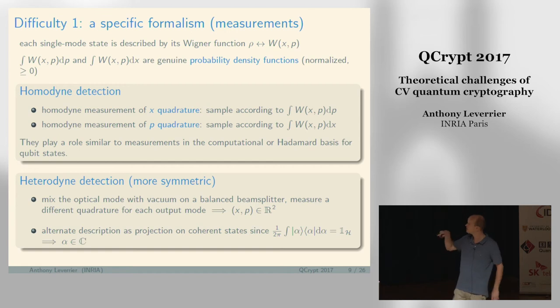The Wigner function can be negative. But it turns out that if you integrate the Wigner function along one quadrature, either p or x, you get a single dimensional distribution which is non-negative and gives you a probability density function.